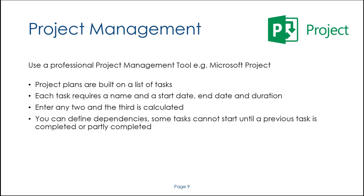You can define dependencies — which tasks have to be completed before a follow-on task can start. For example, if you're building a house: you build the foundations, then the walls, then the roof. You can't start the walls until you finish the foundations, and you can't start the roof until you finish the walls. Any slippage in an earlier task has a knock-on effect later — if the foundations took two months instead of one, the whole project slips by that extra month. Microsoft Project automatically calculates the effect on everything that depends on that slipped task.